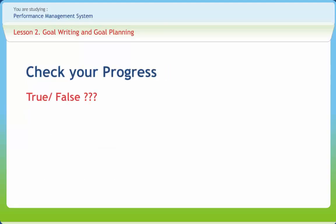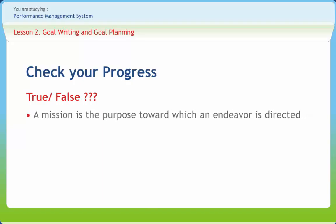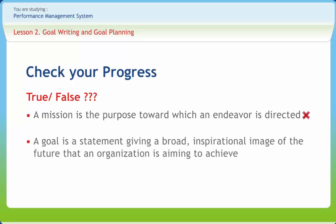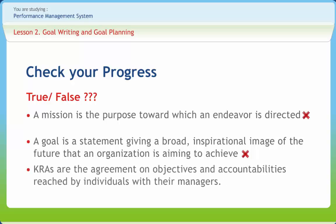Now let us check if we have understood the various concepts discussed in this lesson clearly. A mission is the purpose towards which an endeavor is directed — right or wrong? Wrong. It is a goal. A goal is a statement giving a broad inspirational image of the future that an organization is aiming to achieve — right or wrong? Wrong. It is not a goal; it is a vision. KRAs are the agreement on objectives and accountabilities reached by individuals with their managers — right or wrong? Wrong. It is the performance and development agreement.